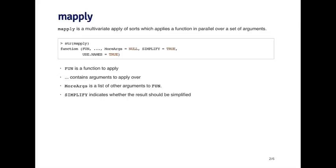So if you have three lists, it'll pass three objects and your function has to take at least three arguments. The MoreArgs argument is for additional arguments you need to pass to your function. The simplify argument is similar to the simplify arguments in sapply and tapply.